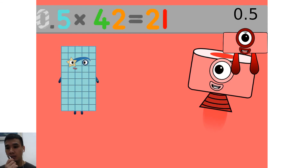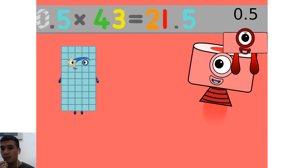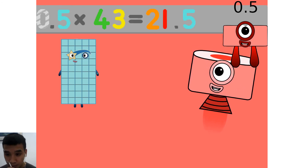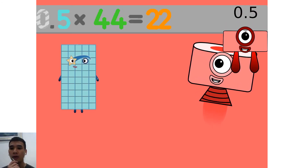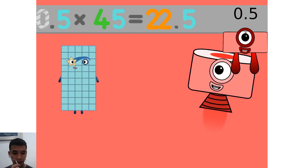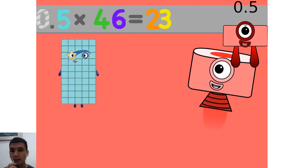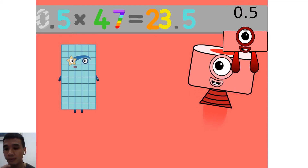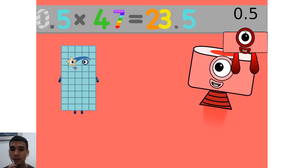0.5 times 42 equals 21. 0.5 times 43 equals 21.5. 0.5 times 44 equals 22. 0.5 times 45 equals 22.5. 0.5 times 46 equals 23. 0.5 times 47 equals 23.5.